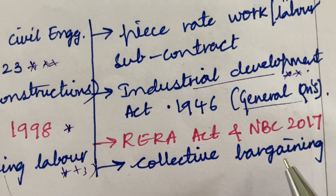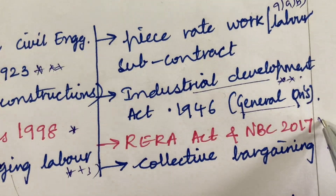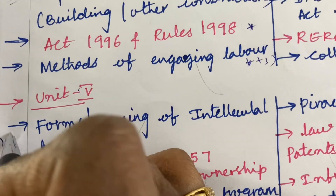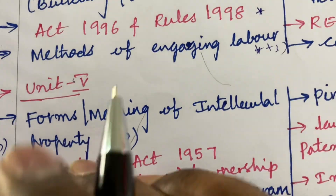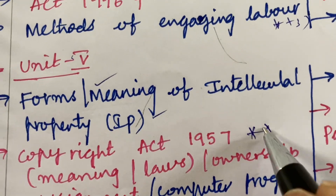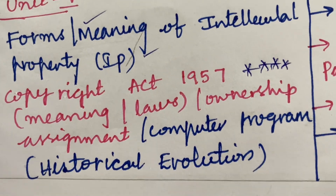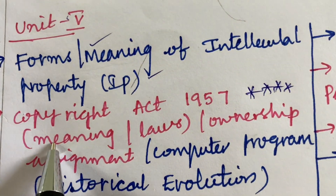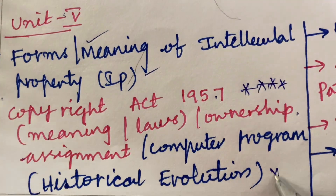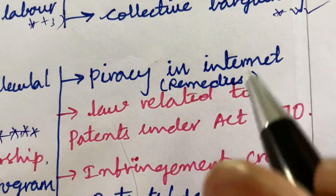The Industrial Development Act 1946 — general questions will be asked related to different industries. You should have thorough knowledge of different industries related to the 1946 Act. RERA Act and NTC 2017 is a gunshot question, and collective bargaining is also one of the top most questions. For 10A and 10B, the meaning of Intellectual Property Rights — IP — and its forms, and the Copyright Act 1957, is a top most short question. Since the paper is all about theory, work out step by step in bullet points. The ownership and assignment of the Copyright Act 1957, along with computer programs and historical evolution, is one of the top most questions. Highlight important points clearly.